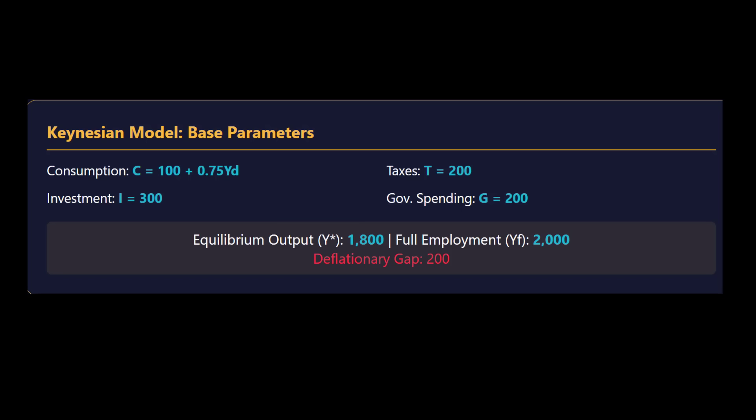Let's start with Policy A — direct government spending. This is the most powerful tool in the toolkit: the government simply spends an extra 50 units, like building a small bridge or hiring more teachers. That entire 50 immediately becomes part of aggregate demand — it's paid out as income and the chain reaction starts. With a multiplier of 4, the total increase in output is 50 times 4, giving us a boost of 200. That's a perfect fix — it closes the gap completely. Every dollar goes straight into the fight, maximizing the multiplier.